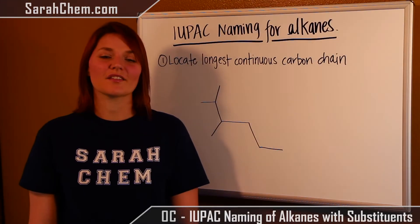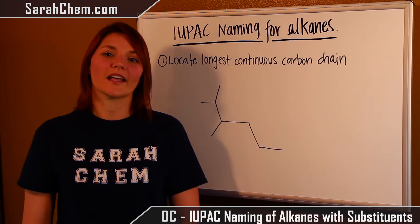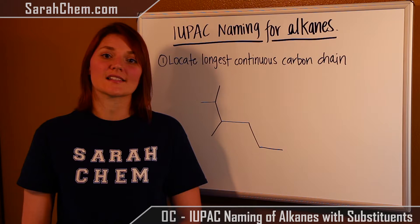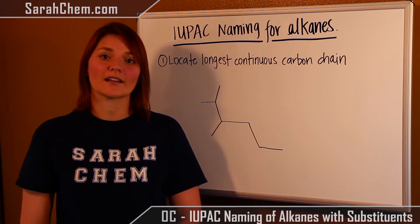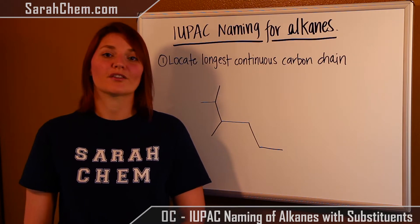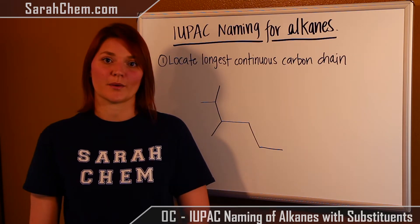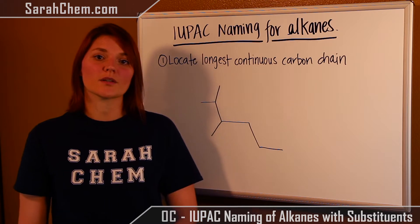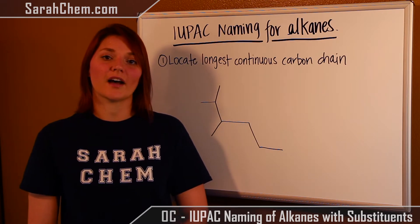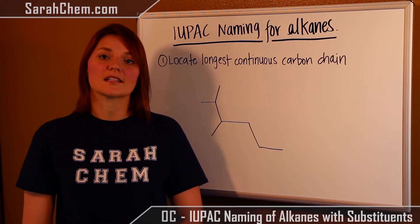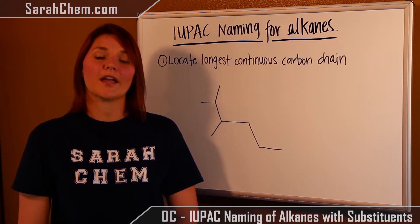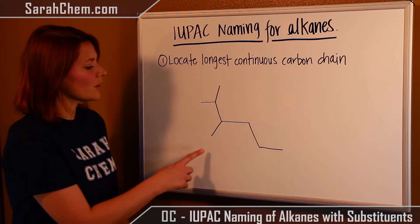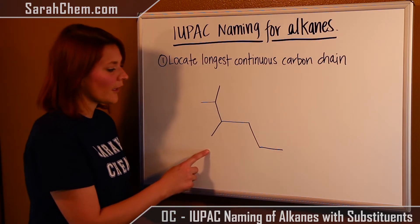Hi everyone! This is a video tutorial to help you understand how to apply the systematic nomenclature rules for naming N-alkanes with substituents. The first thing we want to do, as always, is find the longest continuous carbon chain — that's our parent chain. So let's take a look at this example here.